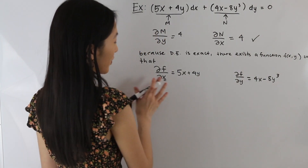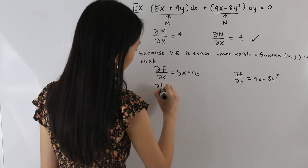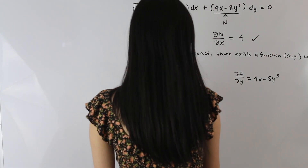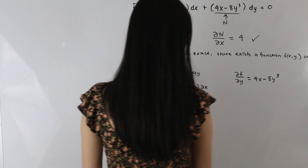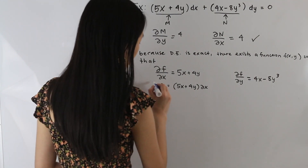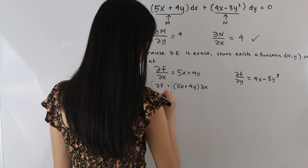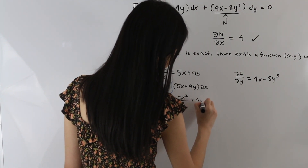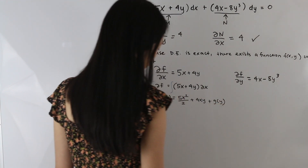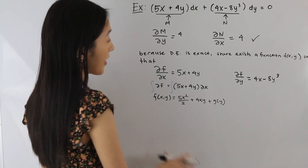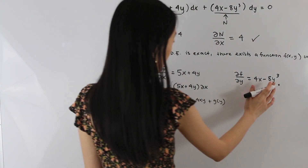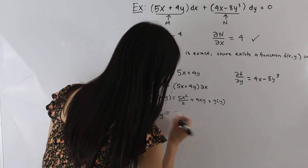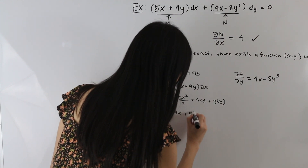We're going to look at the first equation and solve for f. Integrating both sides, we get f(x, y) = 5x²/2 + 4xy + g(y). Now we take the partial derivative of f(x, y) with respect to y, and we get 4x + g′(y).